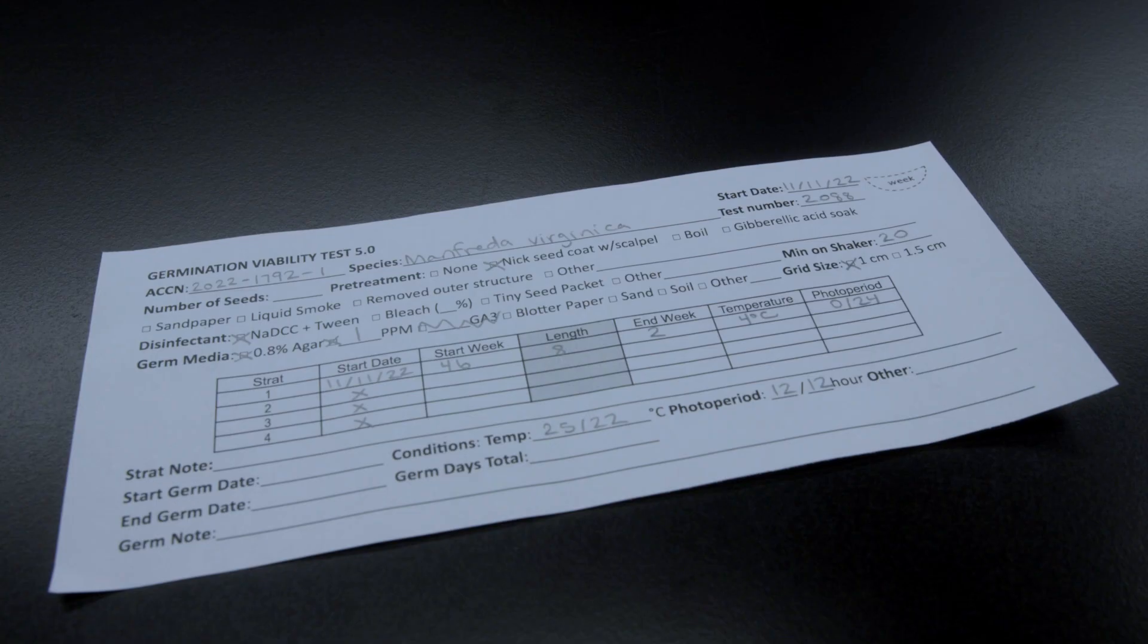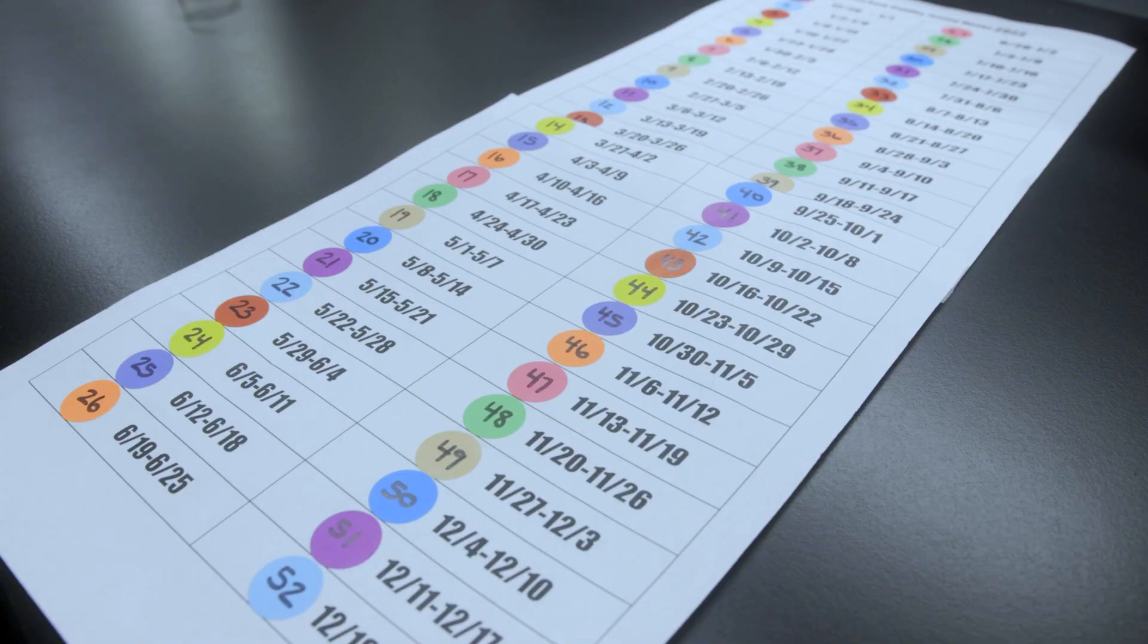Any stratification treatments that the seed might require to break dormancy, I list in the table. We use a 52-week sticker system, which helps us to visually tell when seeds need to move to a different temperature. You can see every week has a different color, so all the weeks ending in 8 are in green, 6 is in orange, and so on.